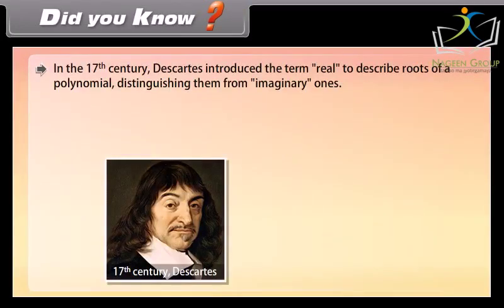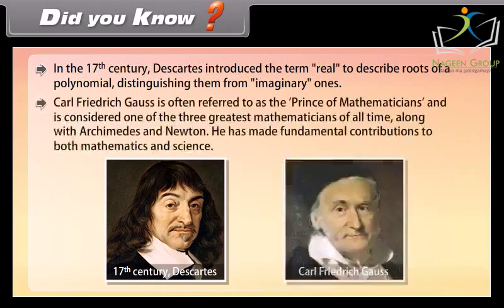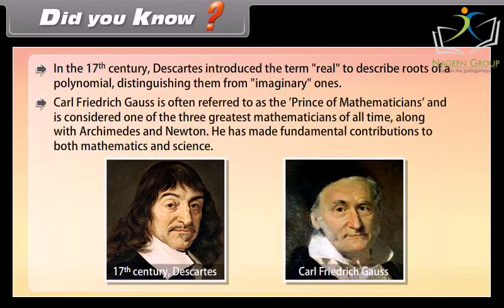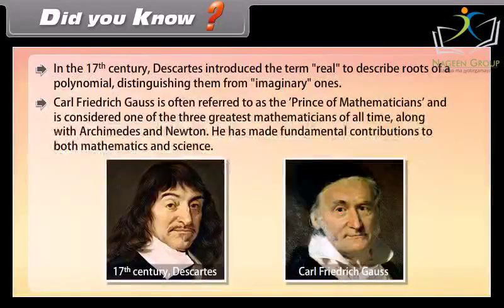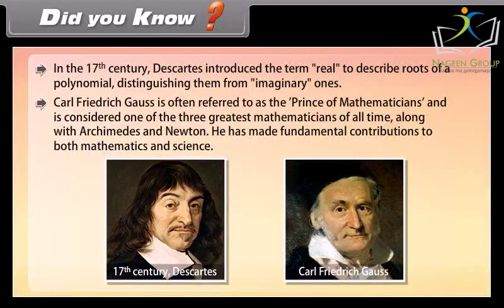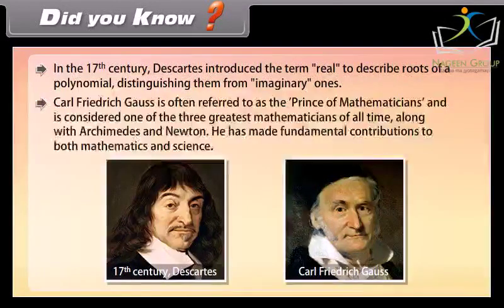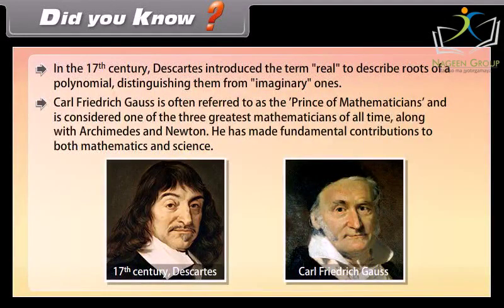Did you know? In the 17th century, Descartes introduced the term real to describe roots of polynomials, distinguishing them from imaginary ones. Karl Friedrich Gauss is often referred to as the Prince of Mathematicians and is considered one of the three greatest mathematicians of all time, along with Archimedes and Newton. He has made fundamental contributions to both mathematics and science.